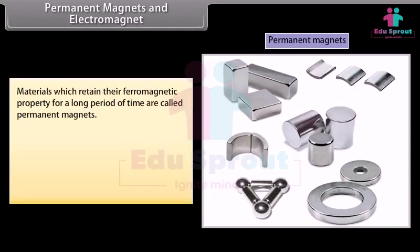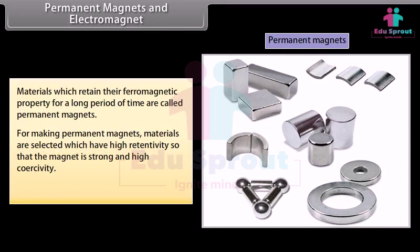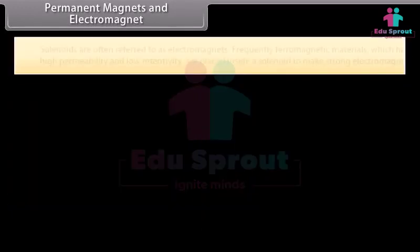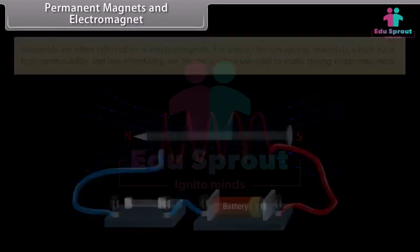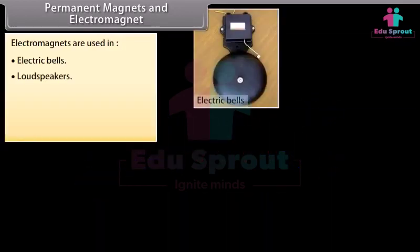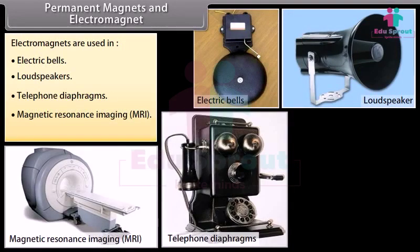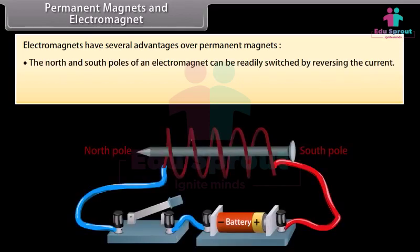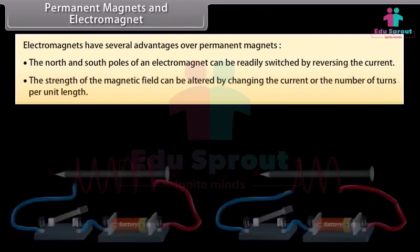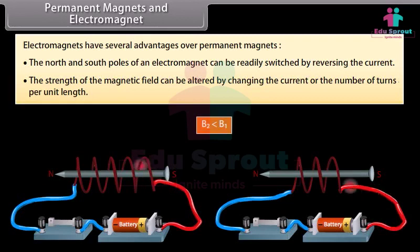Materials which retain their ferromagnetic property for a long time are called permanent magnets. For making permanent magnets, materials with high retentivity and high coercivity are selected — for example, steel, alnico, and cobalt steel. Solenoids are often referred to as electromagnets. Ferromagnetic materials with high permeability and low retentivity are placed inside a solenoid to make strong electromagnets. Electromagnets are used in electric bells, loudspeakers, telephone diaphragms, magnetic resonance imaging (MRI), and cranes to lift heavy materials. Electromagnets have advantages over permanent magnets: the north and south poles can be readily switched by reversing the current, and the strength of the magnetic field can be altered by changing the current or the number of turns per unit length.